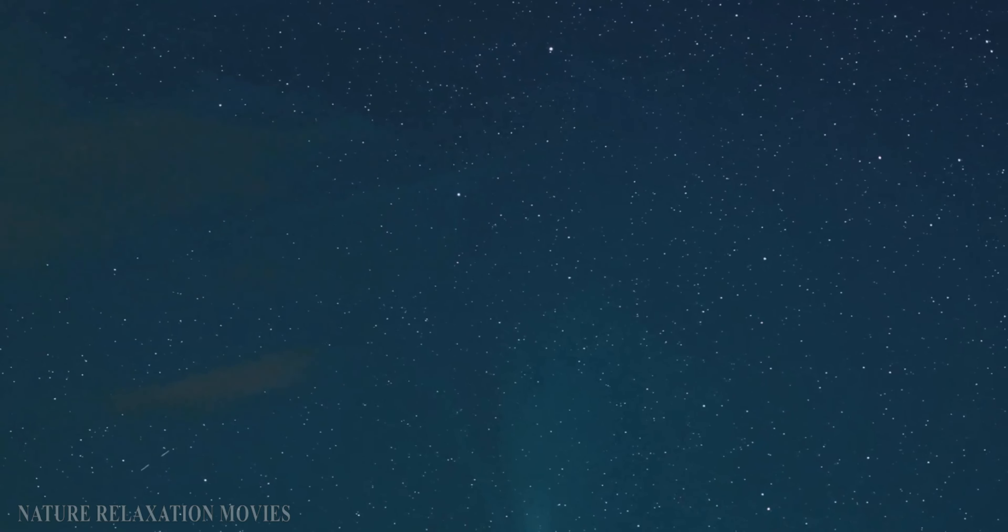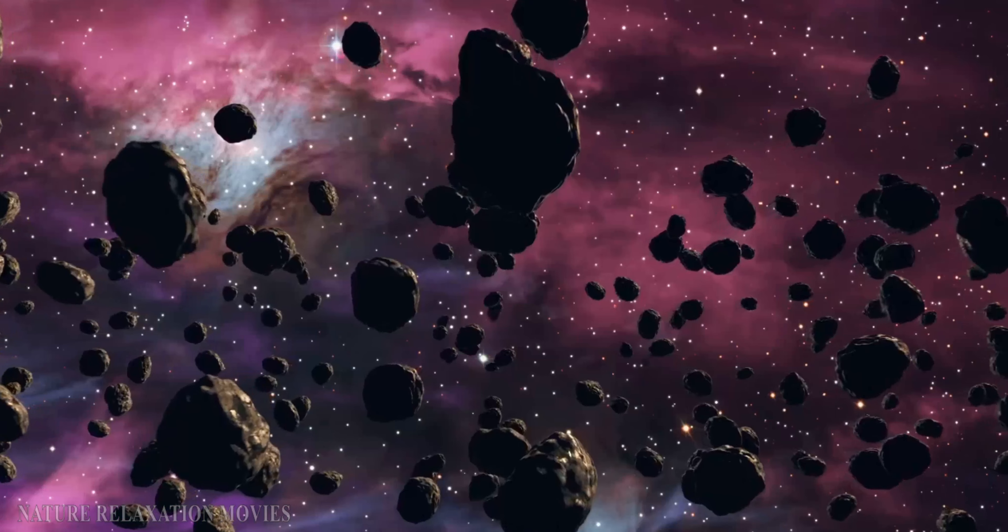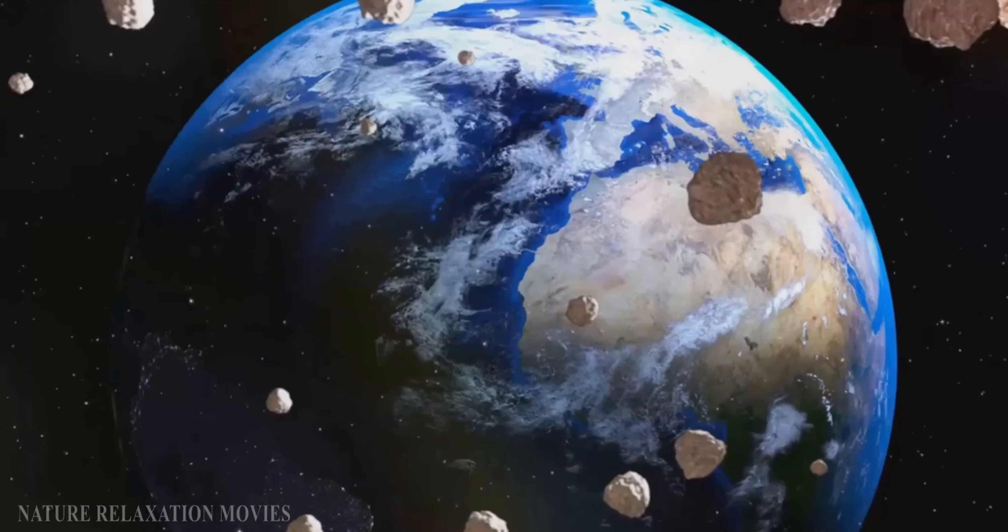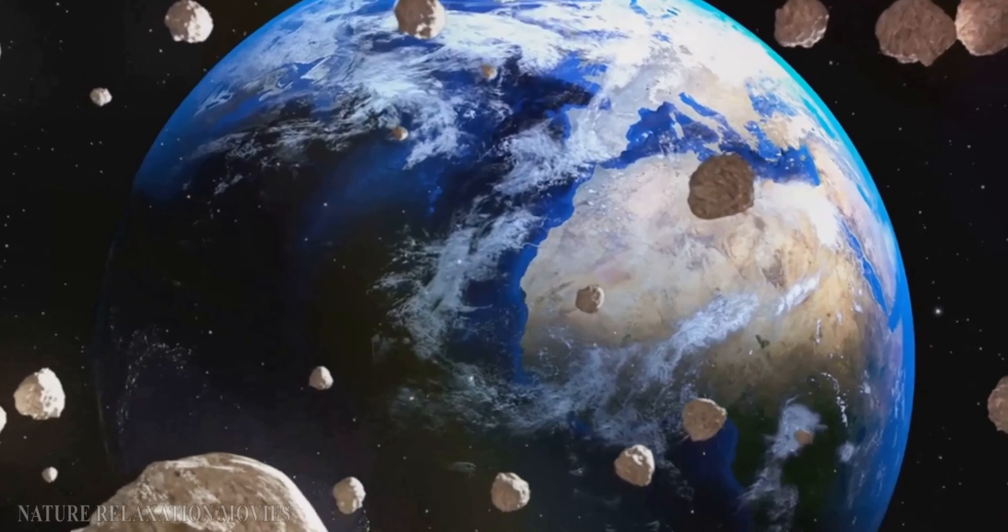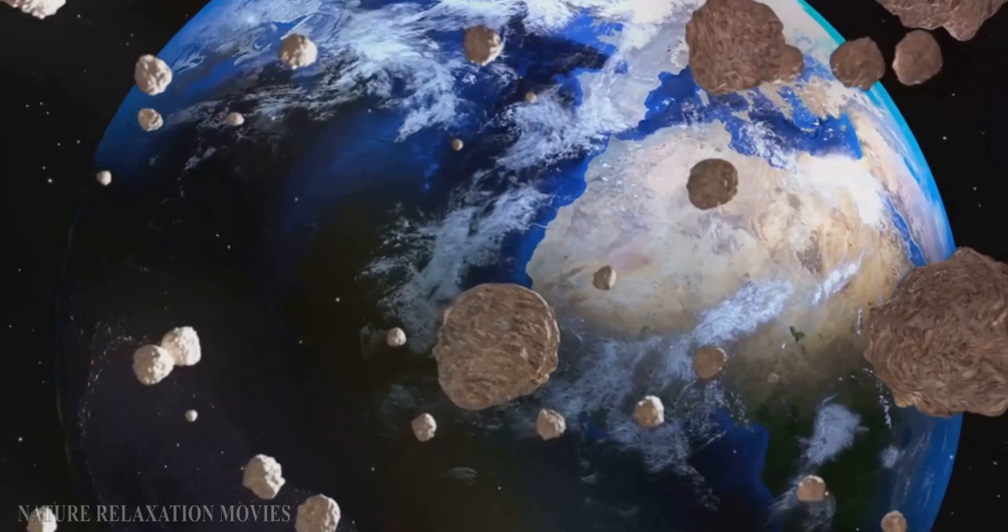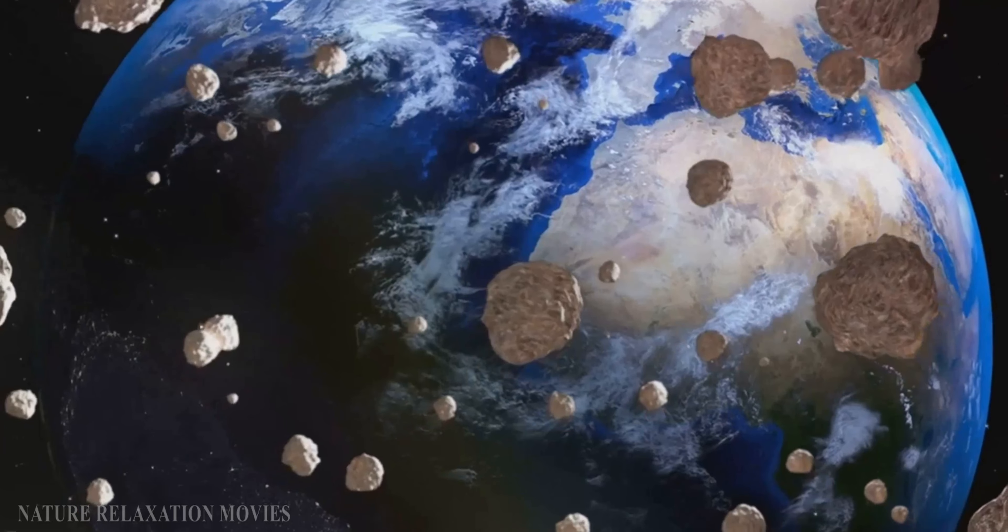As they travel, these cosmic voyagers are subjected to the intense heat of the sun. This heat causes the comet's icy nucleus to vaporize, creating a glowing coma or cloud around it, and often a spectacular tail that points away from the sun.